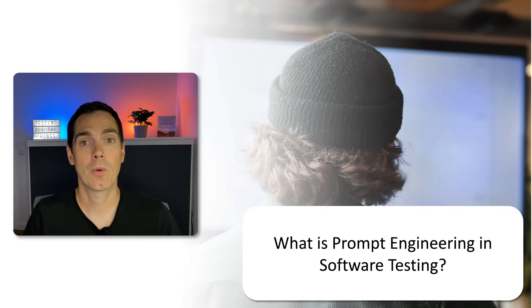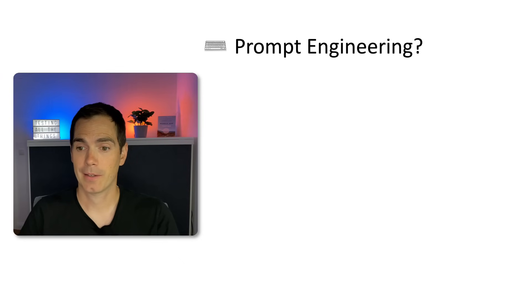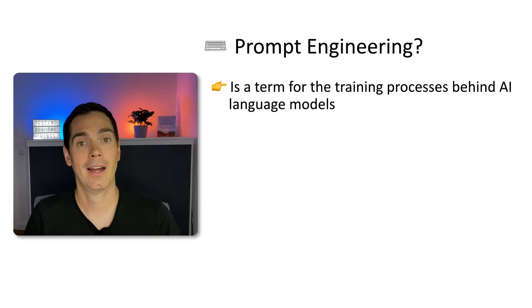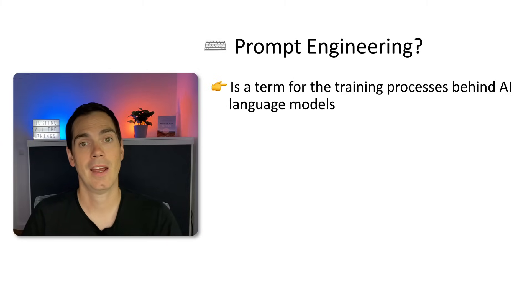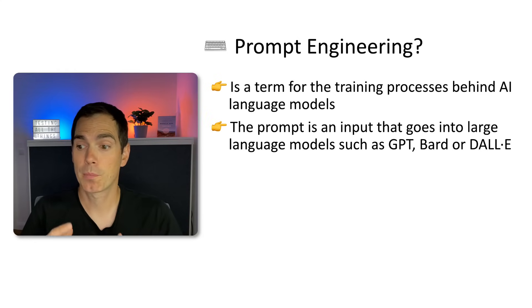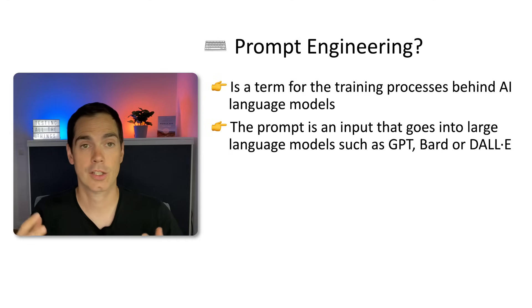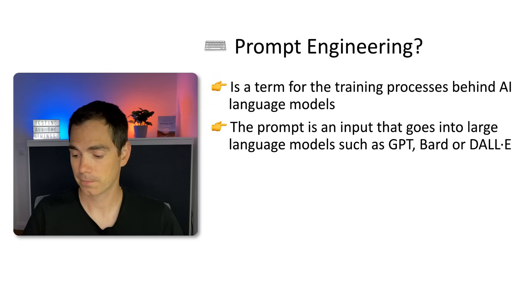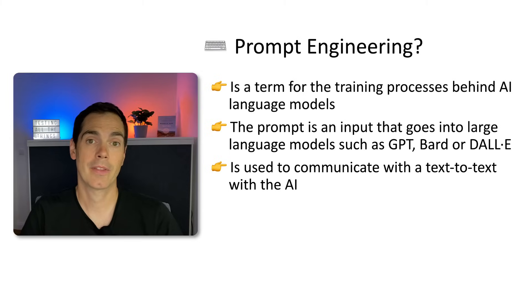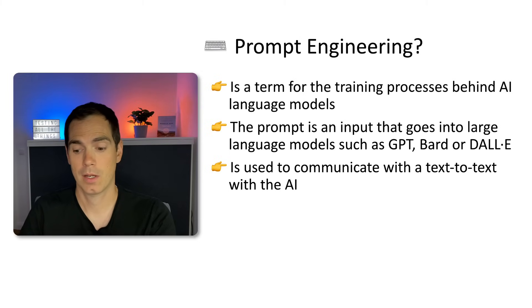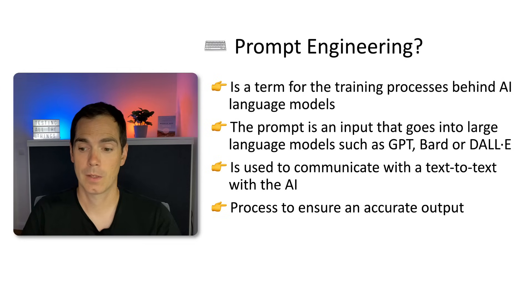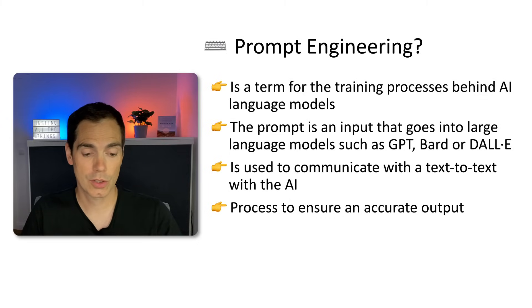So what is prompt engineering in software testing? Prompt engineering is a term for the training processes behind AI language models — it's an umbrella term. With the help of prompts you can train the AI model to deliver better results. A prompt is an input that goes into large language models such as GPT, BARD, or DALL-E. It's used to communicate with the AI, and it's a process to ensure accurate output.